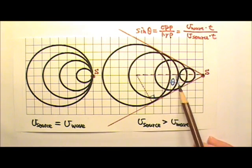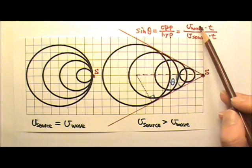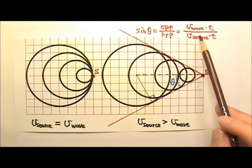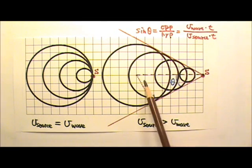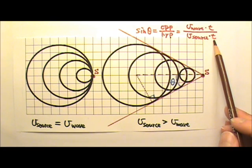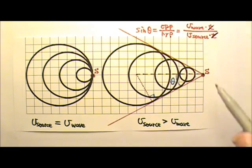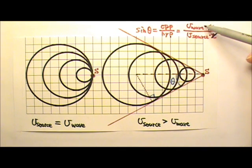So sine theta, which equals opposite side divided by the hypotenuse, would equal the speed of the wave times time divided by the speed of the source times time. And we can cancel the time and get sine theta equals the speed of the wave divided by the speed of the source.